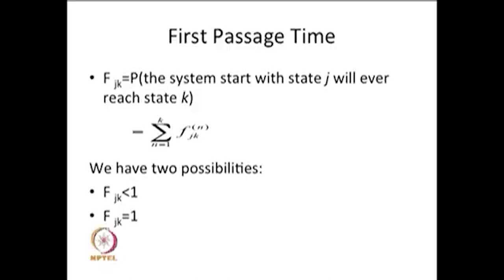The conditional probability that the system is starting from state j and ever entering into state k is obtained by summing over all possible first-time steps of reaching state k, and that sum over all possible n gives the probability of ever visiting state k starting from state j.